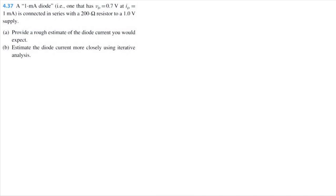Let's solve problem 4.37 from Microelectronics Circuits 8th Edition by Sedra and Smith. A 1 milliamp diode, as in one that has a voltage drop across it of 0.7 volts at a diode current of 1 milliamp, is connected in series with a 200 ohm resistor to a 1 volt supply.